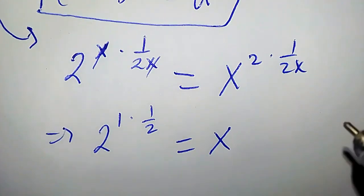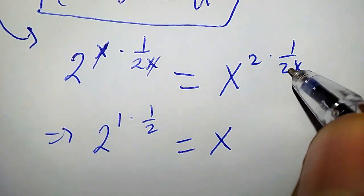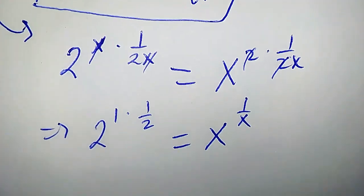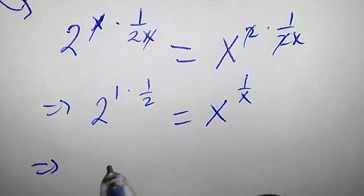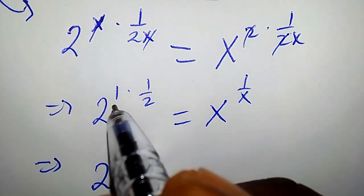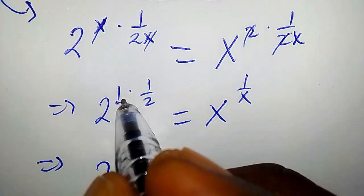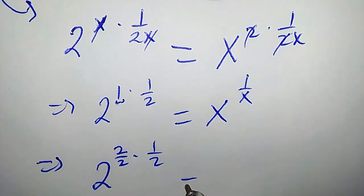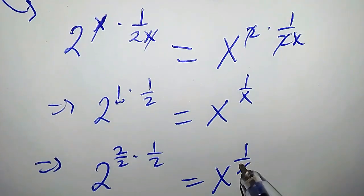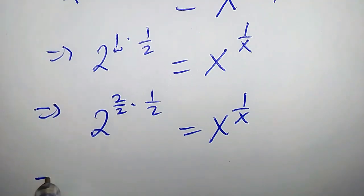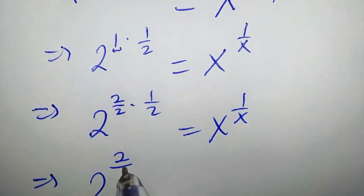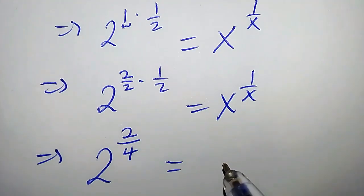We can rewrite the left side as 2 over 2 times one-half, which equals x to the power of 1 over x. Proceeding further: 2 times 1 is 2, and 2 times 2 is 4, so we have 2 to the power of 1 over 4 equals x to the power of 1 over x.